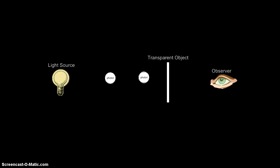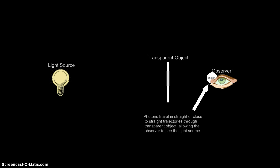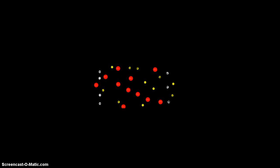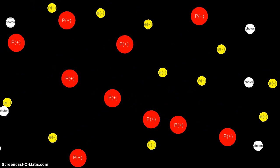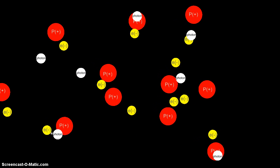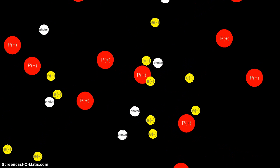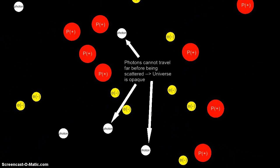However, a transparent object allows photons to pass through it unimpeded. Significantly, a plasma of charged particles is opaque to light. Thus, before recombination, photons could not travel far before being scattered by charged particles. Light could not travel unimpeded through the universe, and the universe was opaque.